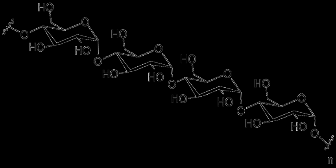Nutrition polysaccharides are common sources of energy. Many organisms can easily break down starches into glucose, however, most organisms cannot metabolize cellulose or other polysaccharides like chitin and arabinoxylans. These carbohydrate types can be metabolized by some bacteria and protists.